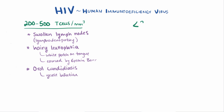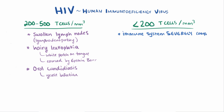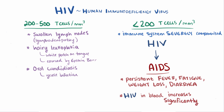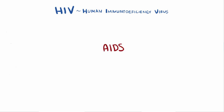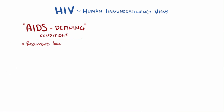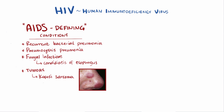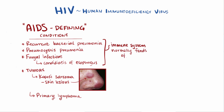As more T cells are lost and levels fall below 200 cells per cubic millimeter, the immune system becomes severely compromised, and at this stage the condition has progressed from HIV disease to AIDS. At this point people experience persistent fever, fatigue, weight loss, and diarrhea, and the HIV count in the blood might increase significantly. Certain conditions start to develop that are said to be AIDS-defining, such as recurrent bacterial pneumonia, pneumocystis pneumonia, and fungal infections like candidiasis of the esophagus. Other conditions include tumors and malignancies like Kaposi's sarcoma, which causes lesions on the skin and other soft tissue, and primary lymphoma of the brain. Many people with AIDS die from infections that a healthy immune system would typically be able to fend off, like pneumocystis, cytomegalovirus, or mycobacterium avium complex.